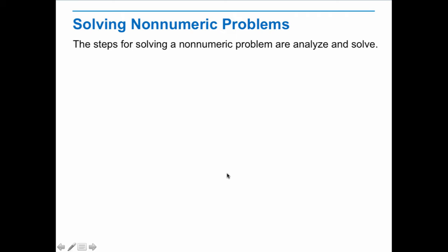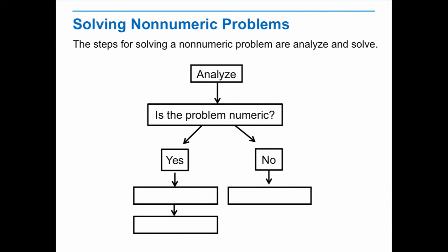What about non-numeric problems? How do we solve those type of problems? The steps for solving a non-numeric problem are analyze and solve. So let's look at the following flowchart. We analyze the problem. We ask, is the problem numeric or not? If it's numeric, what are the two steps that are missing there? If you said calculate and evaluate, give yourself a pat on the back. If it's not, what should we do? If it's non-numeric, our step is simply to solve.